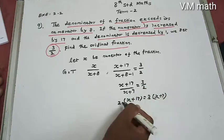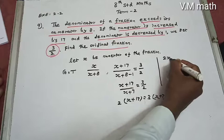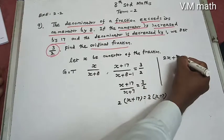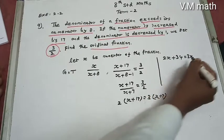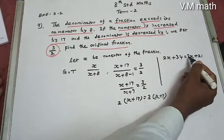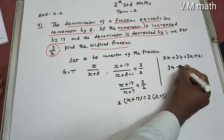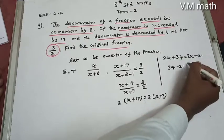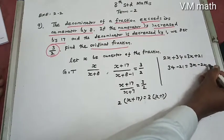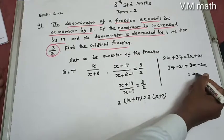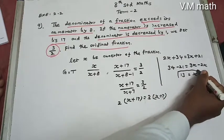Expanding: 2x plus 34 equals 3x plus 21. Rearranging: 34 minus 21 equals 3x minus 2x, so x equals 13.